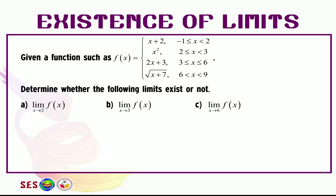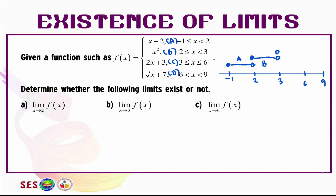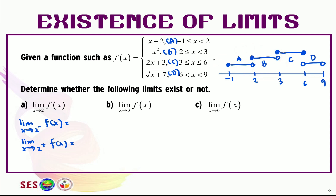Now let's try without the graph. You've seen this type of question from the previous video. I gave you one trick: without sketching any graphs, you just arrange the functions on a number line. Let's see question A first. To show whether the limit exists, we find the limit from both sides — limit as x approaches 2 from the left, and limit as x approaches 2 from the right. We focus at x equals 2 and the function surrounding it. To approach from the left, we use function A, replacing f(x) with x plus 2.